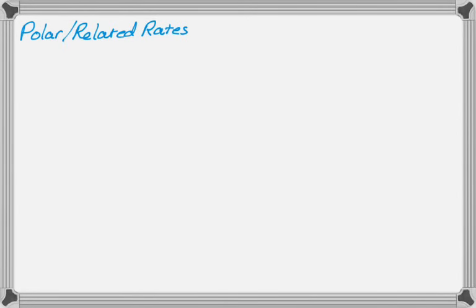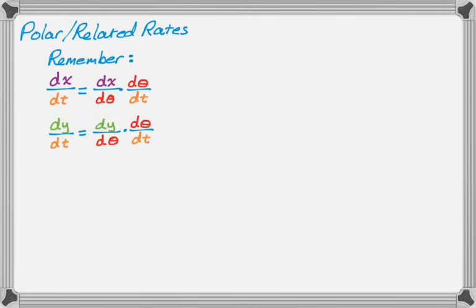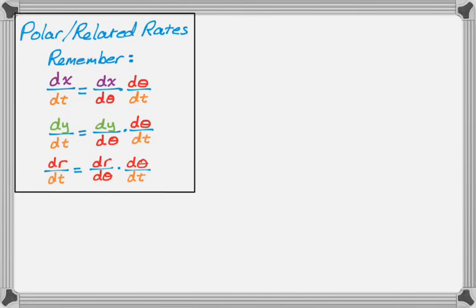So dx/dt is going to be dx/dθ times dθ/dt. The same idea, dy/dt is dy/dθ times dθ/dt. And then finally, sometimes you have to find dr/dt, which is just going to be dr/dθ times dθ/dt. So nothing really groundbreaking there, but it does come up, and every time it comes up, my students tend to look at the question and kind of have to hesitate for a second. So I wanted to throw that in there so that you're aware of it and thinking about it.